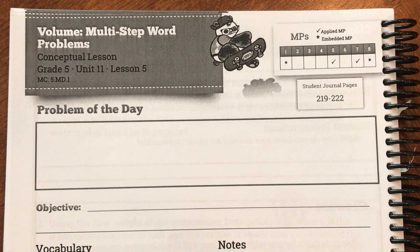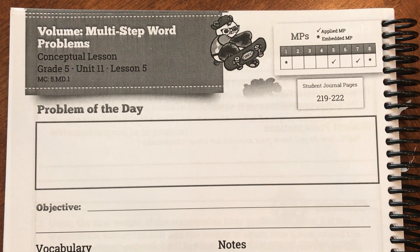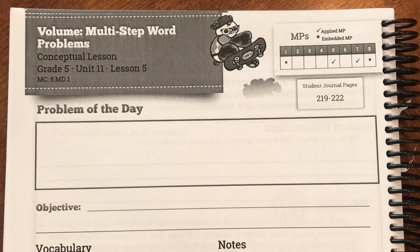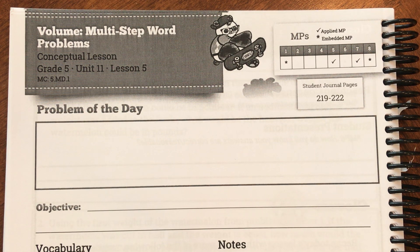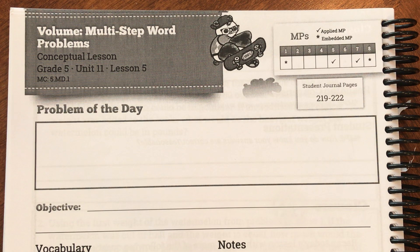Good morning 5th graders. Today we are on page 220 of your student journal and we are in unit 11 lesson 5. We are going to be starting something a little bit new but also continuing with what we've been doing. At the beginning of this unit we solved multi-step length problems, then we just finished solving multi-step weight problems, and today we're going to begin solving multi-step volume problems. Even though it's something new, there's a lot of repetition to what we've been doing.